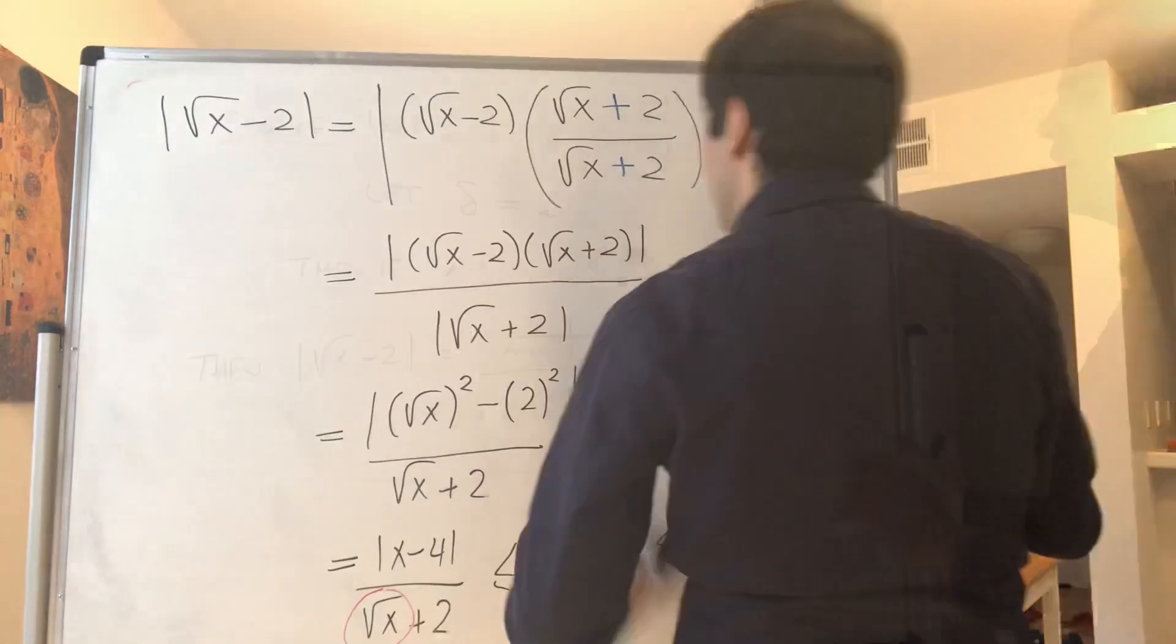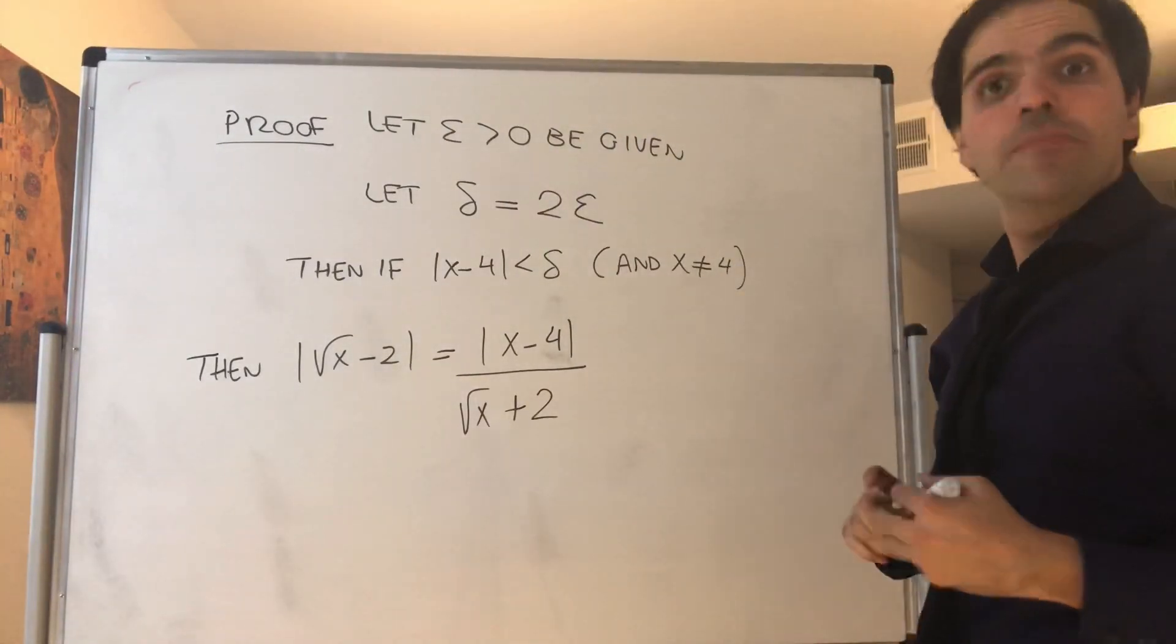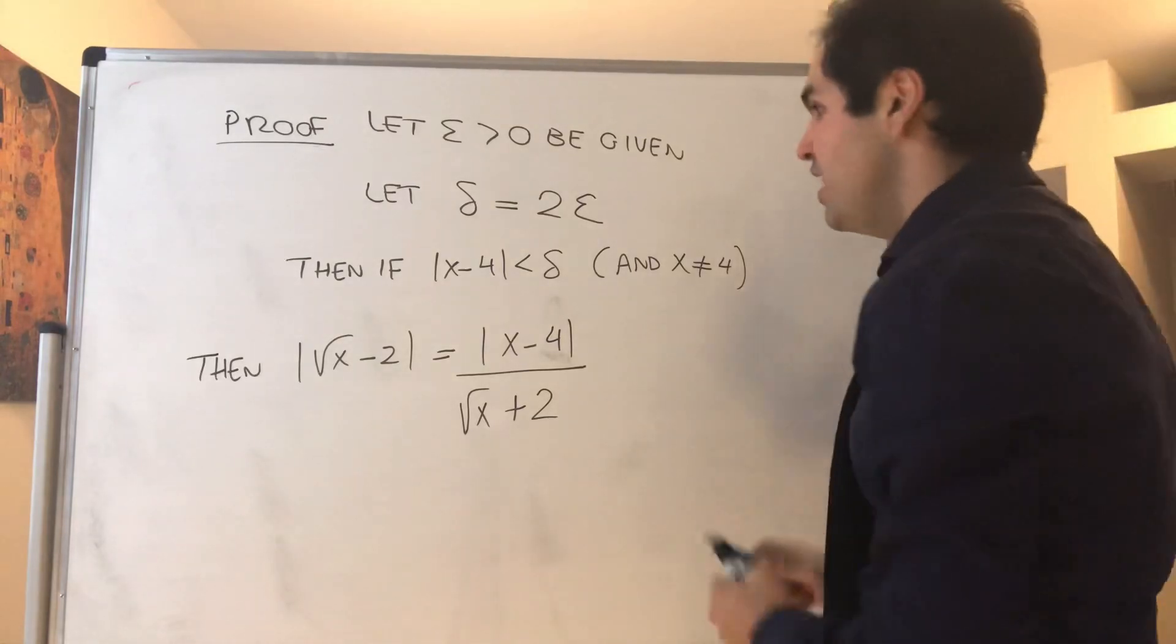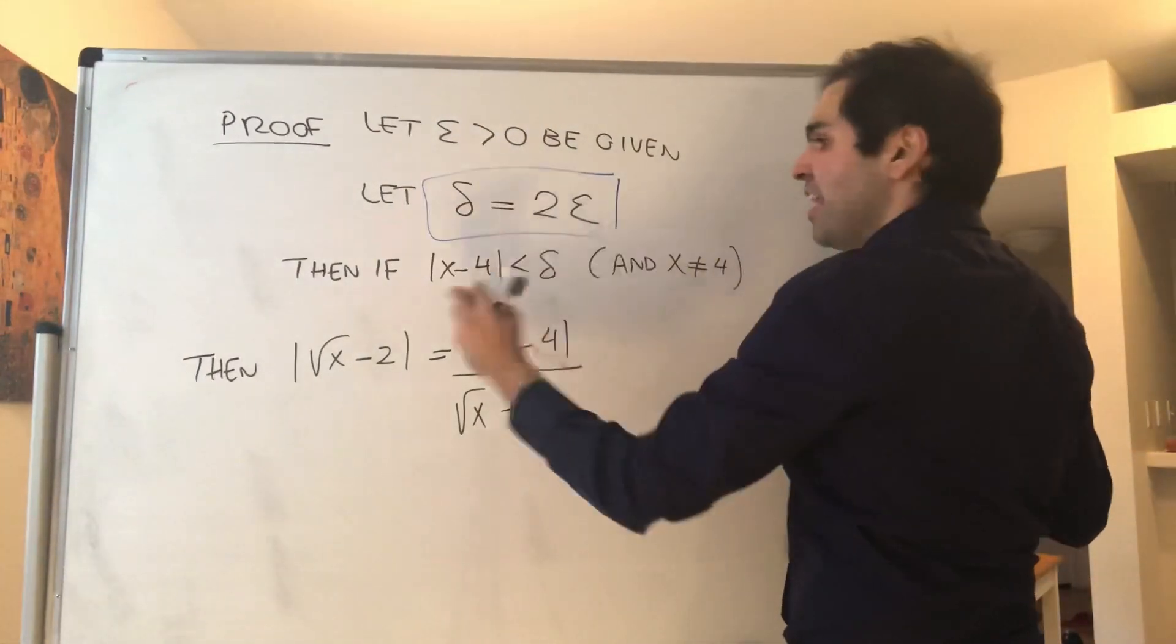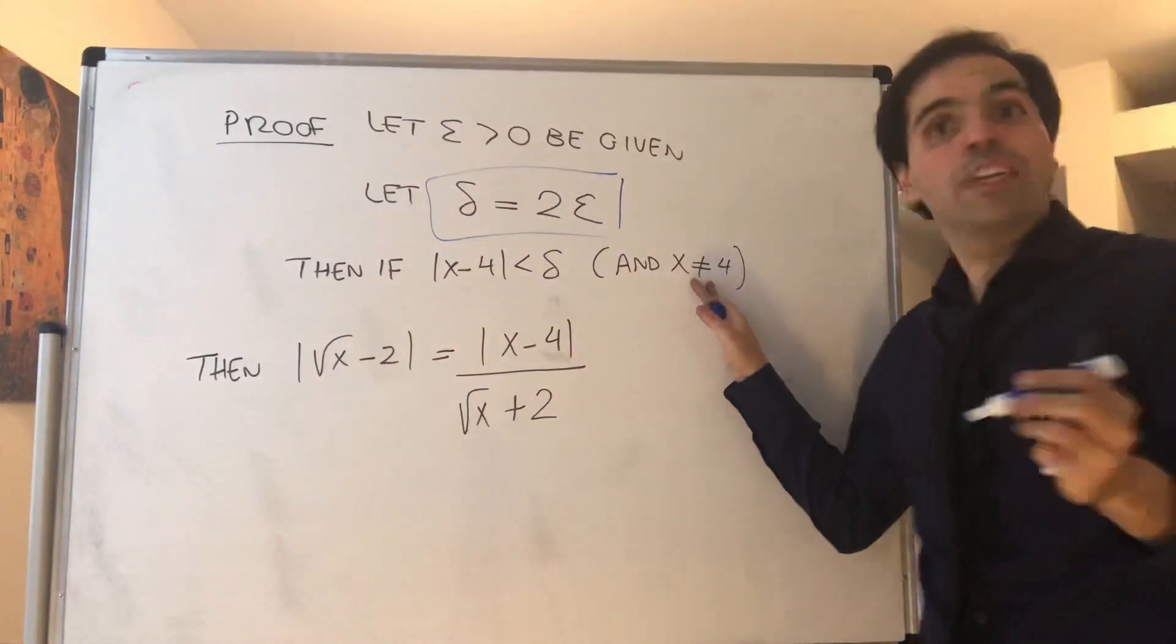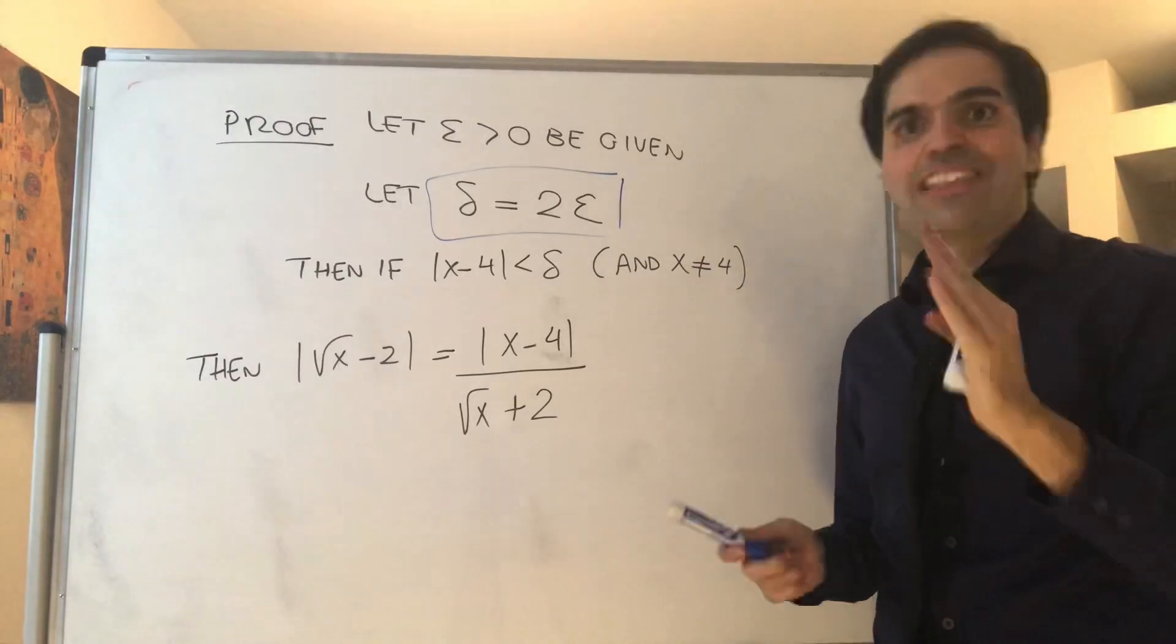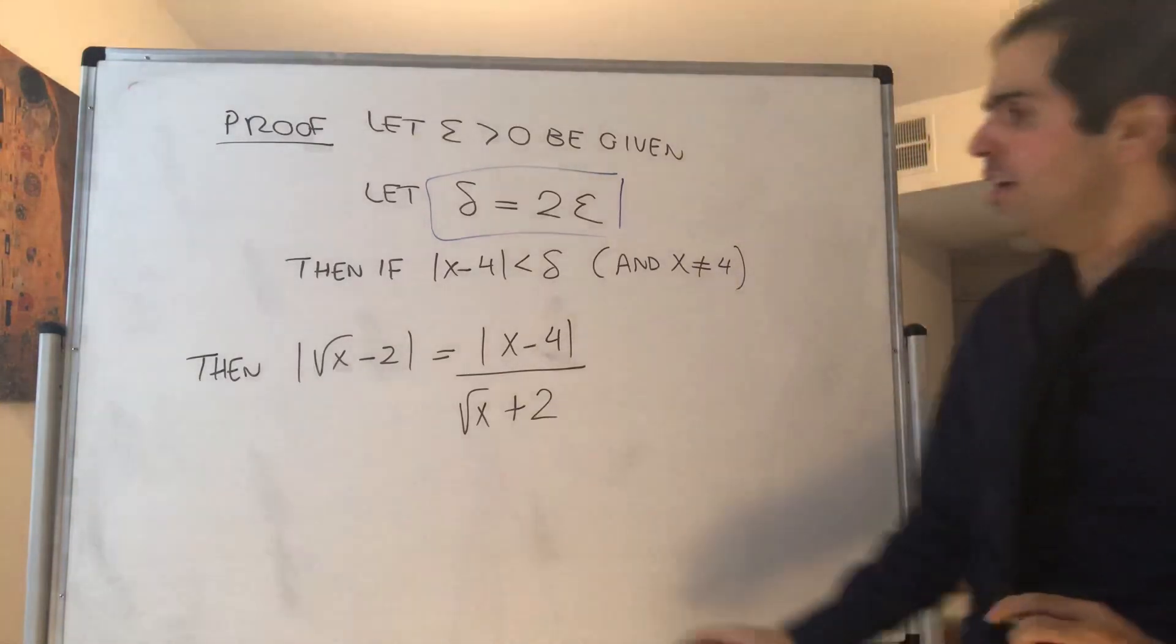Here's our proof. So, let epsilon be given, and let delta be the stuff that we just found, namely 2 epsilon. Then, if x minus 4 is less than delta, and also, strictly speaking, x cannot be 4, because for limits, we don't care exactly what happens at that number.